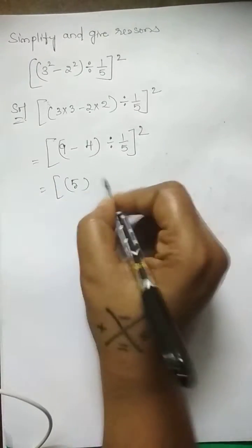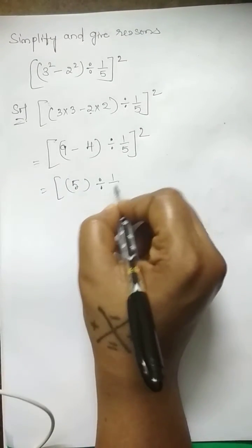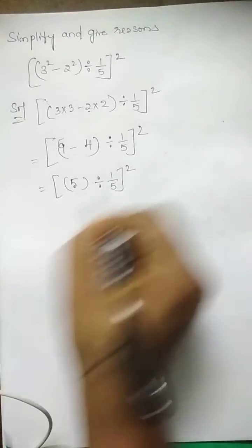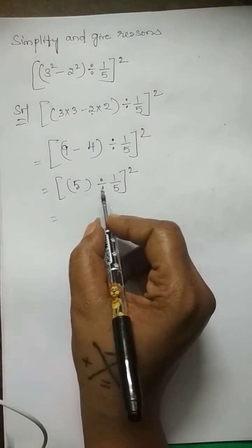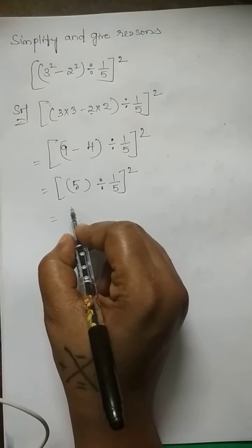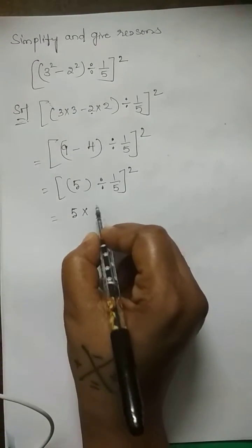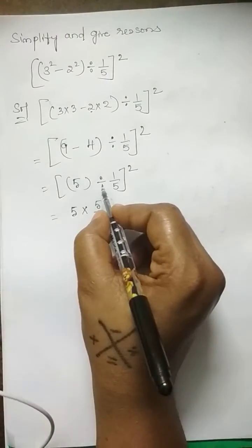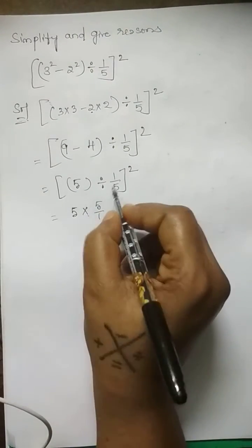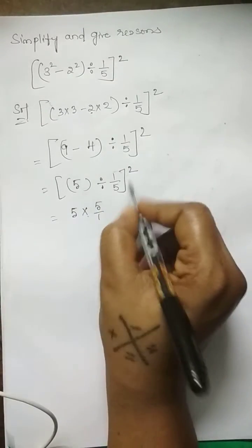5 is our answer and divided by 1/5 whole squared. Now if you convert division into multiplication it will be reciprocal. That means 5 into 5 by 1. When we convert division into multiplication, the number on the right-hand side will be reciprocal.